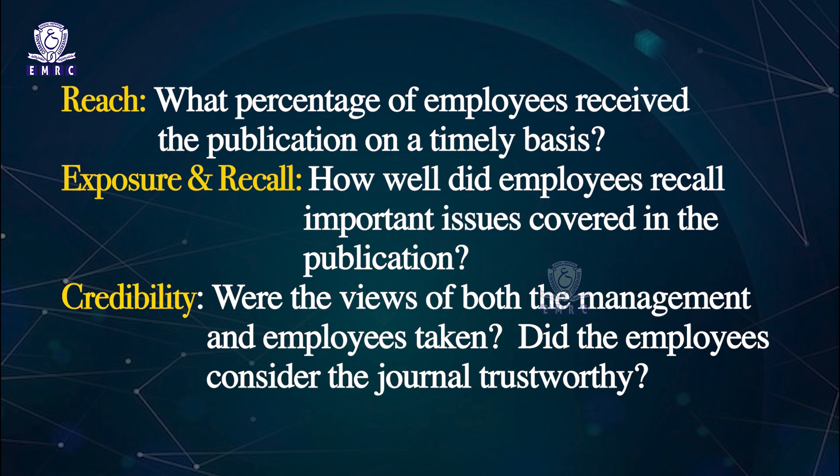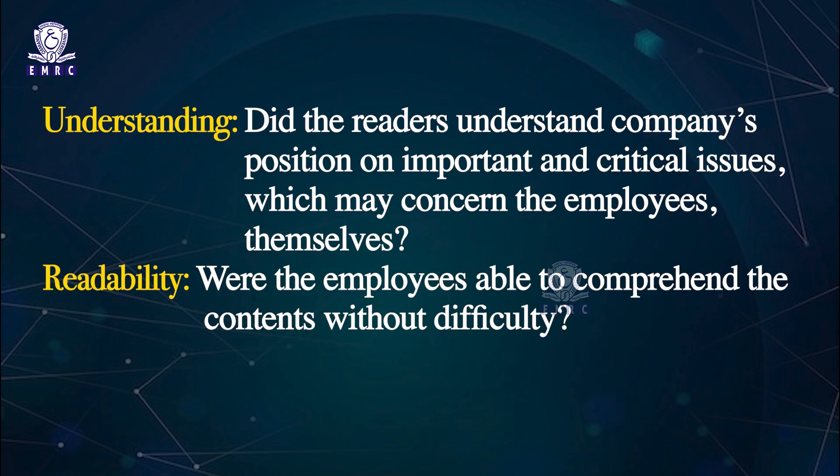Taking the example of evaluating a company's house journal, the evaluation should ideally aim at: reach — what percentage of employees received the publication on a timely basis; exposure and recall — how well employees recalled important issues covered; credibility — whether views of both management and employees were taken and whether employees considered the journal trustworthy; understanding — did readers understand the company's position on critical issues; and readability — were employees able to comprehend the contents without difficulty. This evaluation helps management understand the utility of the house journal as part of internal communication.